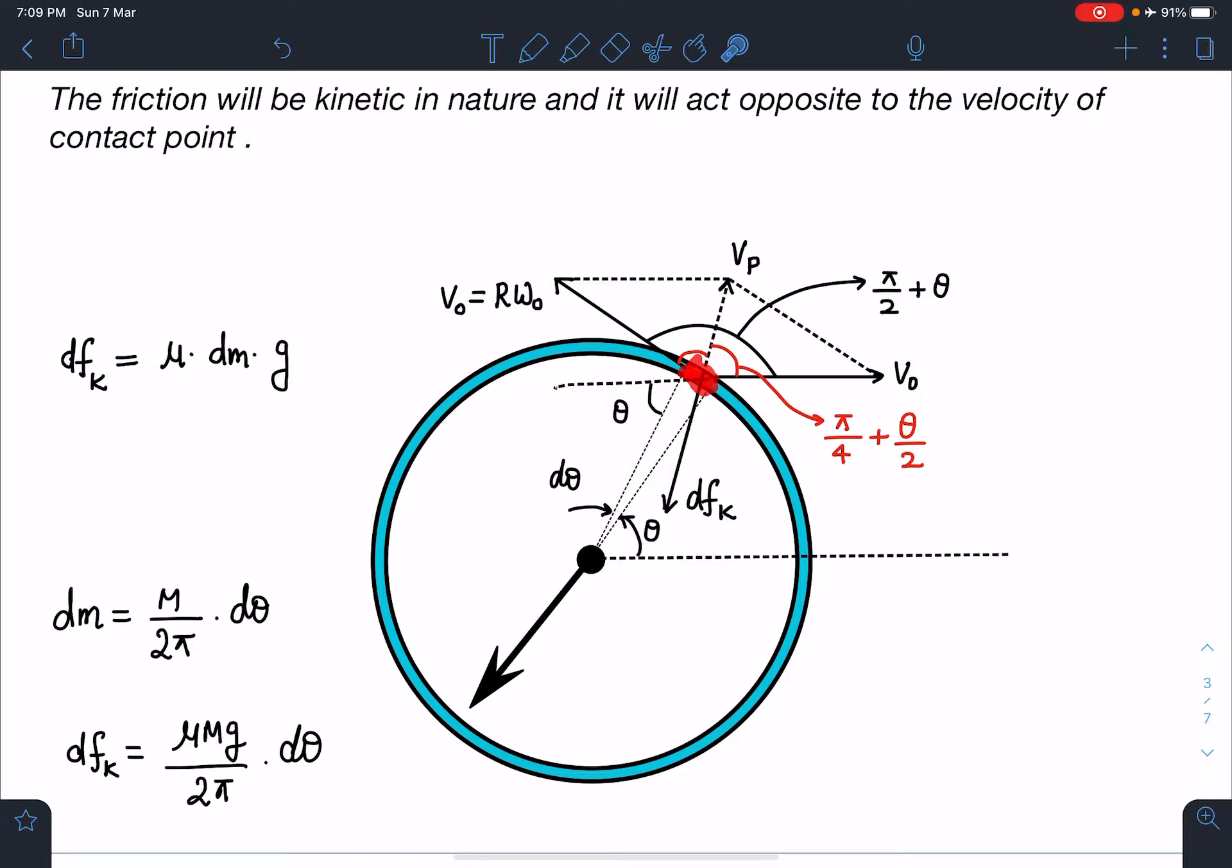On this element, due to translation you can see its velocity is V₀ in this direction, and due to rotation this R ω₀ value will be in this direction, which is also V₀. The resultant of these two will be somewhere in this direction. Opposite to this velocity, friction will be acting and it will be changing its direction at every point.